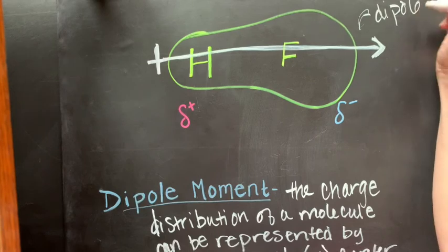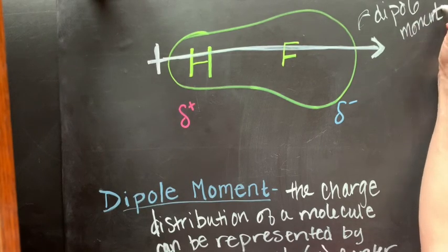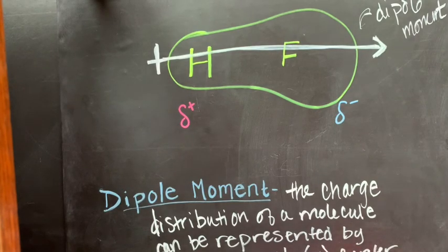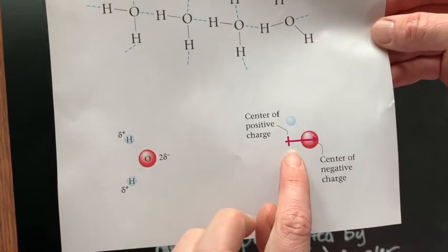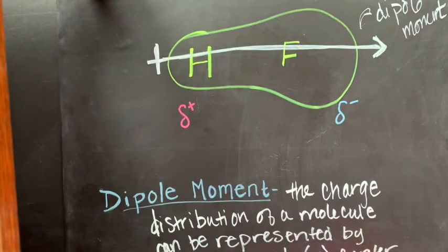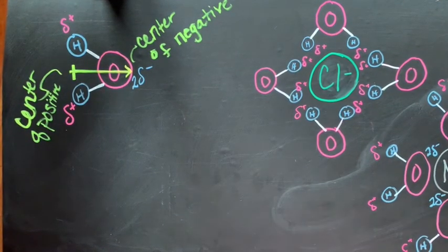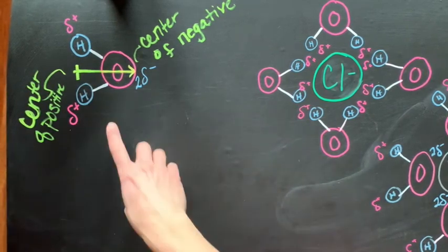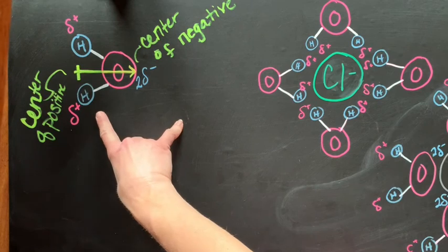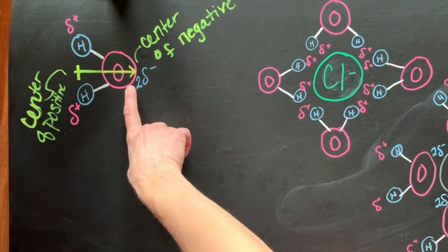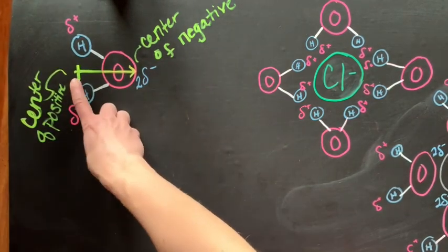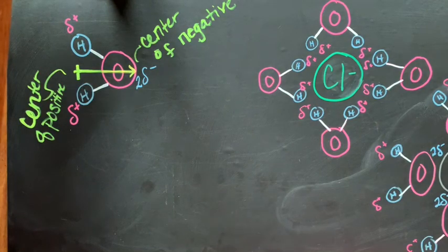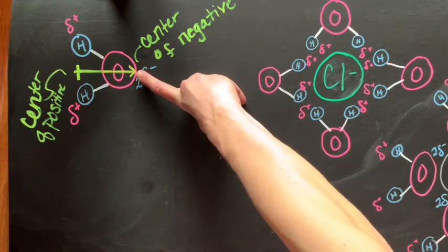Dipole moments become especially important when we talk about the water molecule. Water molecules also form dipole moments — the center of positive charge is between our two hydrogen atoms and the center of negative charge is by the oxygen. When oxygen bonds with two hydrogens, the oxygen ends up with a double partial negative charge, giving water its characteristic dipole.